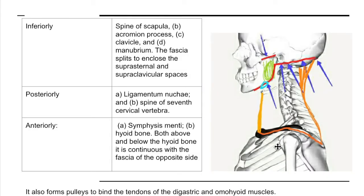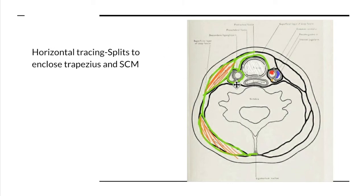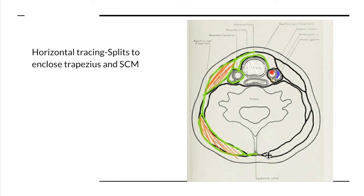Now tracing it horizontally in the transverse section: starting from the ligamentum nuchae, as it goes forward it splits to enclose the trapezius muscle. Continuing forward, it forms the roof of the posterior triangle. At the posterior border of the sternocleidomastoid it again splits to enclose the sternocleidomastoid, and moving forward it comes to the center of the neck and merges with the fascia of the opposite side — forming a complete collar.